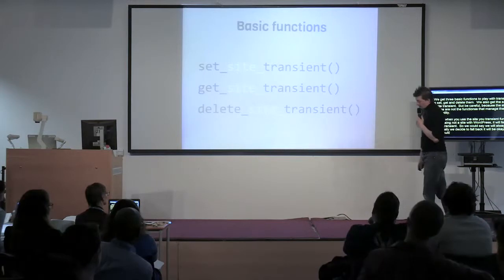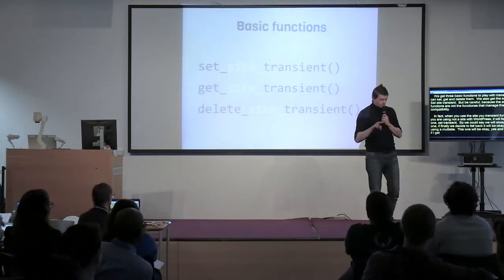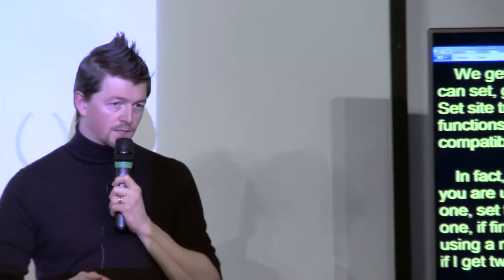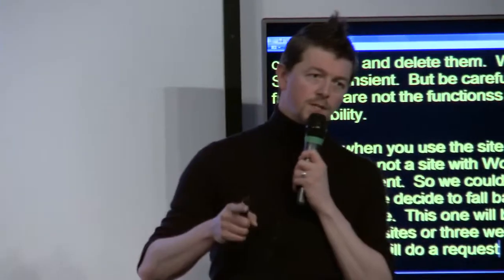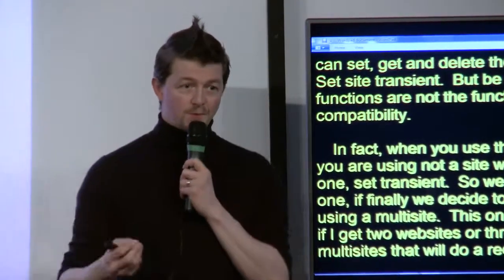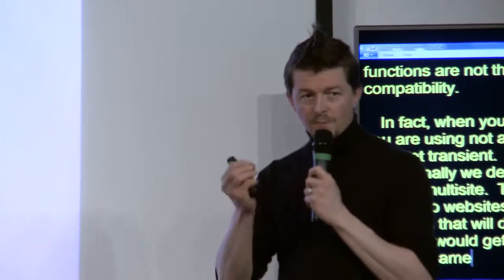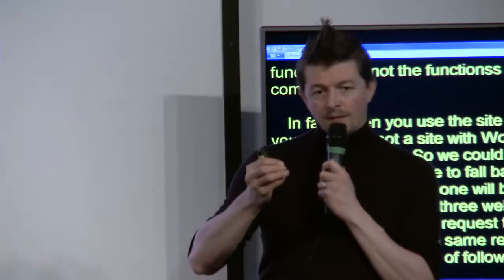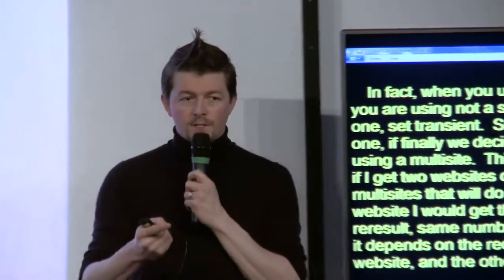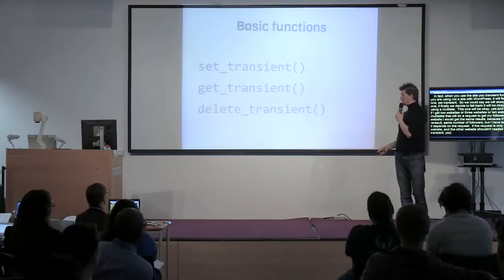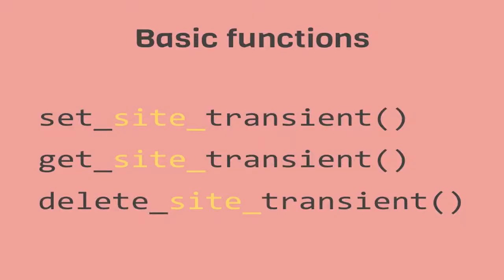You could say I'll always use set_site_transient and if I'm not in a multi-site, the fallback will be fine. But yes and no - because if you have ten websites in your multi-site that each do an external request to get your followers, you'll get the same result but with ten requests. It's just useless. So it depends on the request. If the request is only for one website and another website shouldn't read the transient, use set_transient. If it's shared across the multi-site, use set_site_transient.